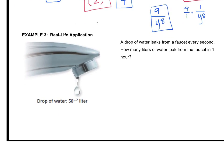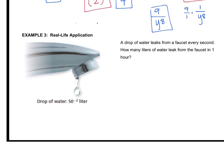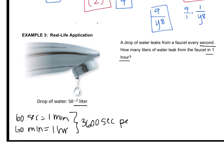Let's check out this real-life application. A drop of water leaks from a faucet every second. How many liters of water leak from the faucet in one hour? So I've got seconds, I've got liters, I've got hours. How many seconds are in an hour? 60 seconds is 1 minute, and 60 minutes is 1 hour. So how many seconds are in an hour? That's 3,600 seconds per hour.